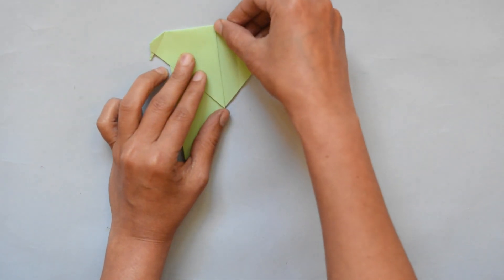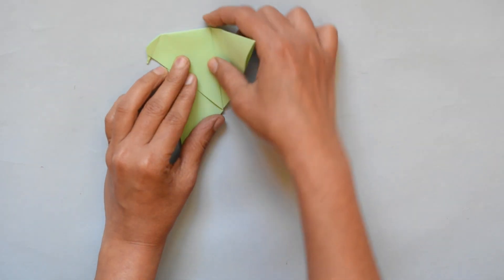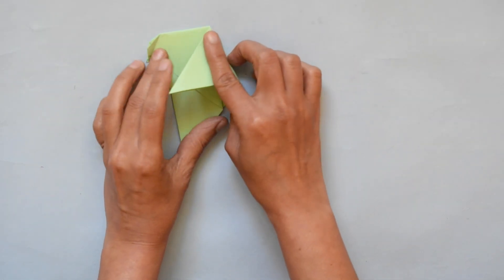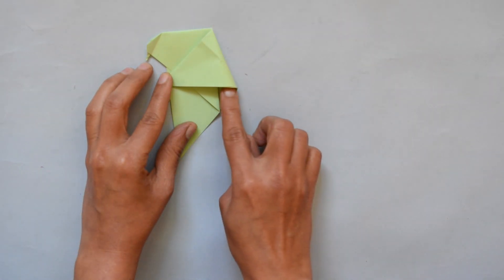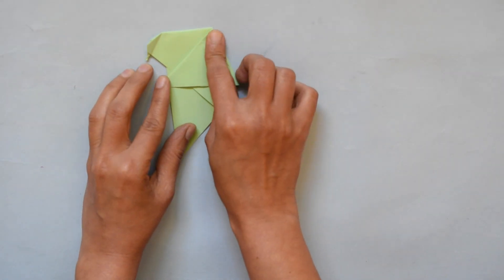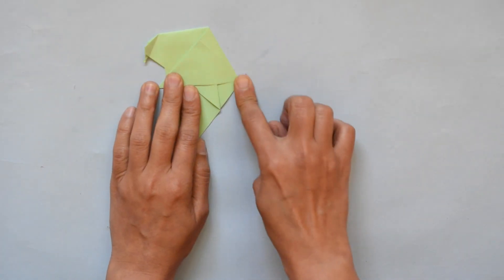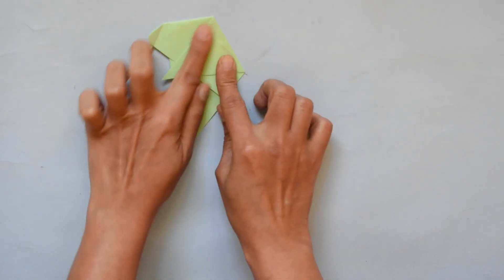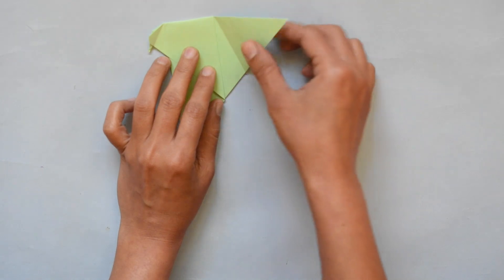Now fold like this. So you will get one slanting line here. Now fold it in the middle and press it. Here we have a slanting line.